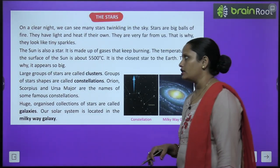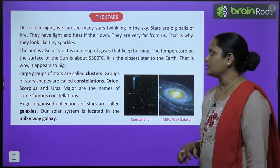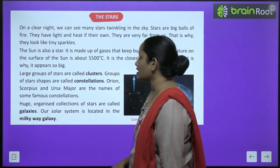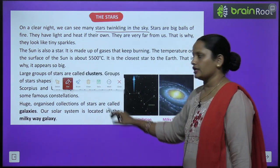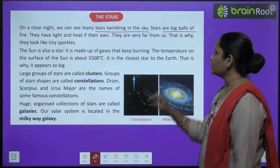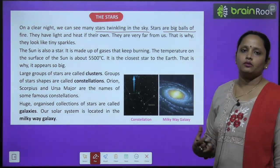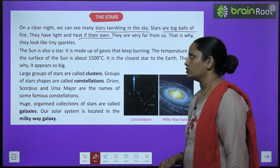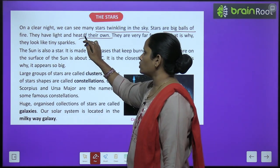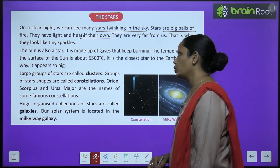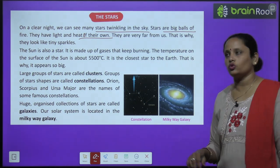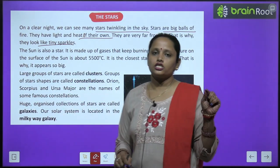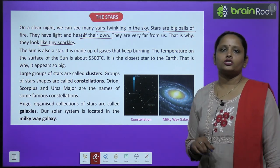On a clear night we can see many stars twinkling in the sky. Stars are big balls of fire — they have their own light and heat. They are very far from us, that is why they look like tiny sparkles. The sun is also a star.